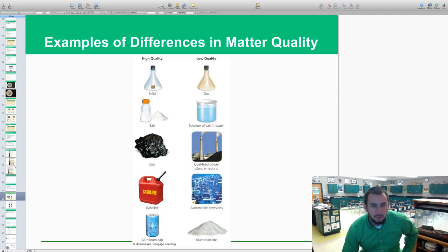Examples of different differences in matter quality. Higher quality would be a solid, lower quality would be a gas—the particles are more spread out. Salt is higher quality, a solution of salt and water because it's spread out is lower quality. Coal in a hard mass chunk form versus coal-fired power plant emissions, the smoke coming off of it has coal particles but very hard to use as a resource. Gasoline in liquid form versus automobile emissions would be lower quality.